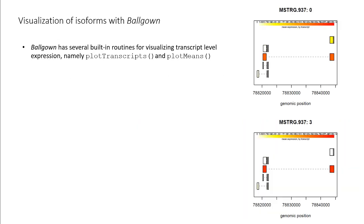At this point, we have loaded in our count data and provided our experimental metadata in the pdata table. We can now use some of the built-in Ballgown routines for visualizing our transcripts. The two main ones are plotTranscripts and plotMeans.